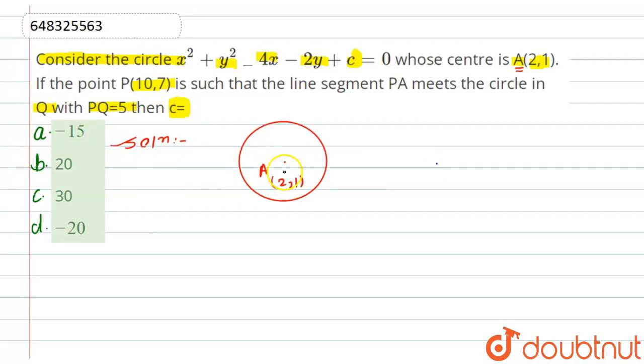If we join the center of the circle and this point P, which is having the coordinate of 10,7, it will cut the circle at point Q. While it is given, the length of PQ is 5. So we have to find the value of C. Before that, I need to find the radius of the circle.